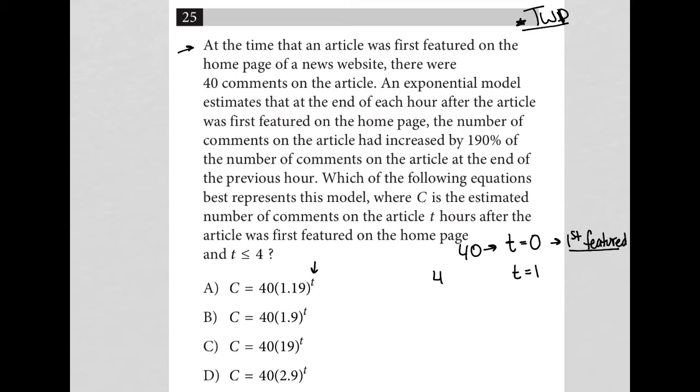So what does that mean? That means that at T equals one, we'd have the 40 comments from before, because that's the number of comments from the previous hour, plus we'd have 190% increase. So plus it'd be 40 times 1.9. That's the translation for that. That's what we should see happening at T equals one.